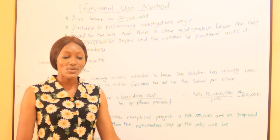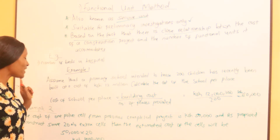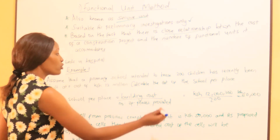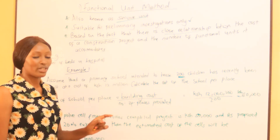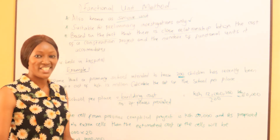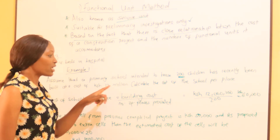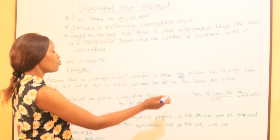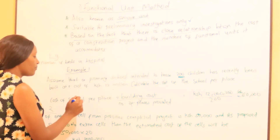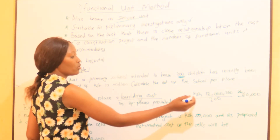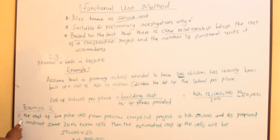Let's do two worked examples. Example one: a primary school intended to house 200 children has recently been built at a cost of 12 million. We are asked to calculate the total cost of the school per place. The school carries 200 students and cost 12 million, so cost per place equals 12 million divided by 200, which gives us 60,000.